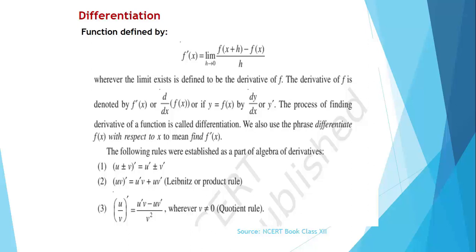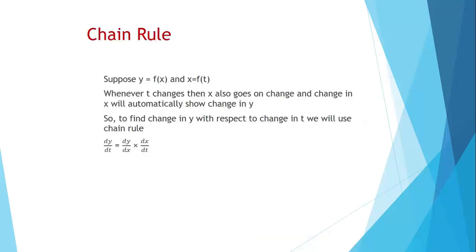Now, what is the chain rule? Suppose y = f(x) and x = f(t), meaning y is a function of x and x is a function of t. Whenever t changes, x changes automatically, and whenever x changes, y changes. To find the direct change of y with respect to t, we use the chain rule: dy/dt = dy/dx · dx/dt. This is our chain rule.